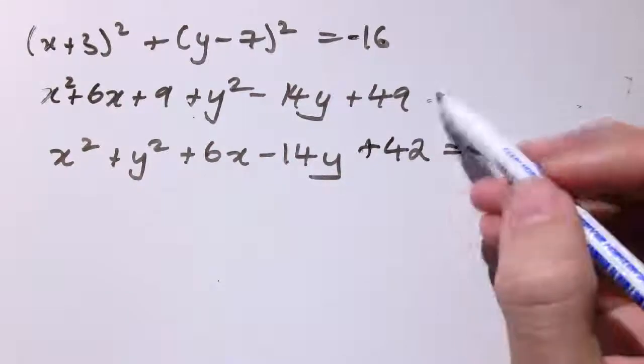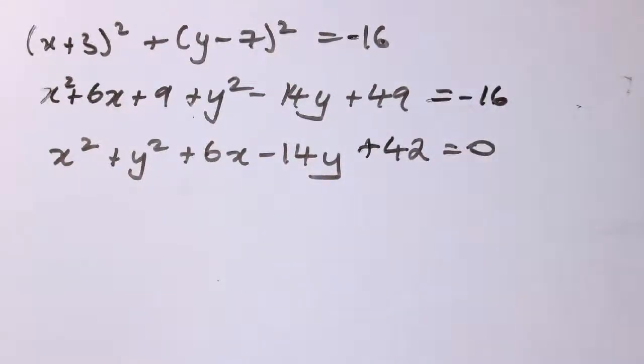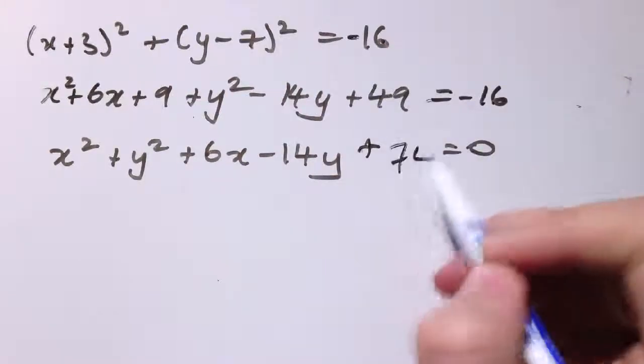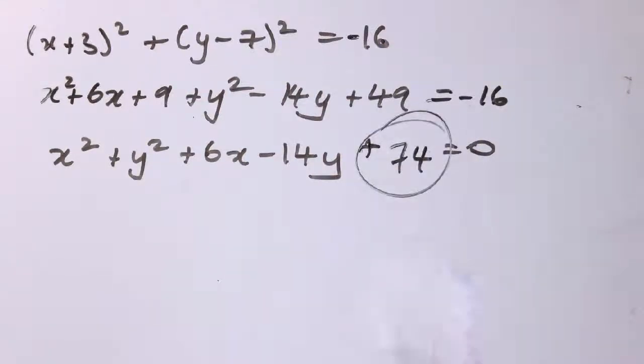And so if I do minus 16 minus 9 minus 49, I get minus 74. So this would end up being plus 74. So actually this one, just by changing this number slightly, it's not a circle anymore because it would have to have radius the square root of minus 16.